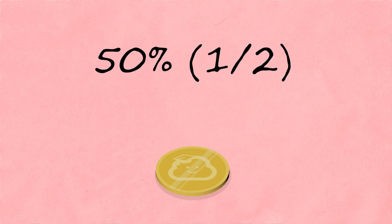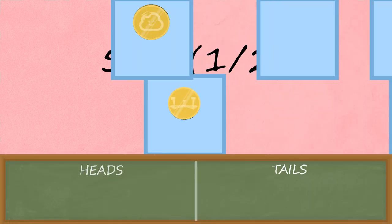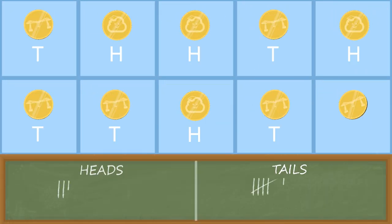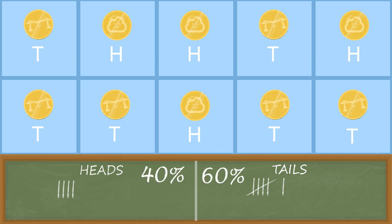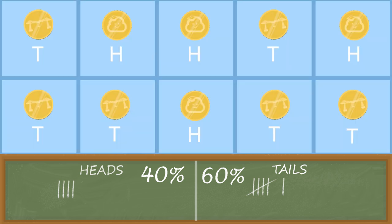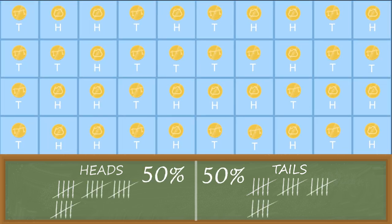A fair coin toss should be heads 50% of the time, but if we flip a coin 10 times in a row, we may not get equal results. This is called relative frequency, and it's a useful experiment to test a theory. The more trials carried out, the more accurate it will be.